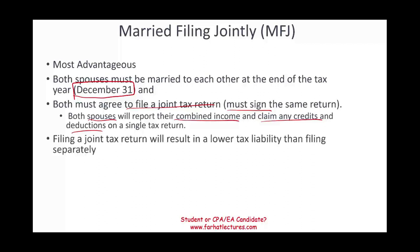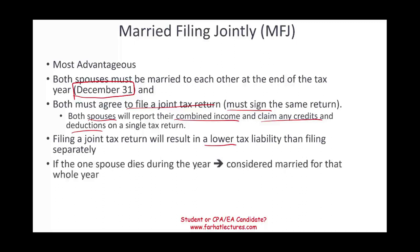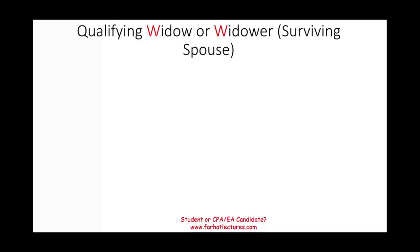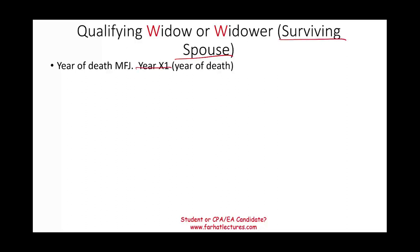Filing a joint tax return results in a lower tax liability than filing separately. Married filing jointly is the most advantageous option. If one spouse passes away during the year, the couple is still considered married for the whole year — so for that year, it's still married filing jointly.